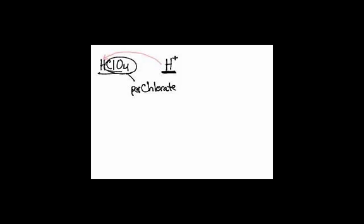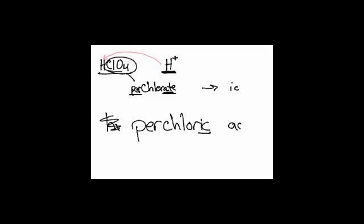Oh, it's perchlorate. It has ClO4. Now watch, it's perchlorate, but it ends in ate. And if it ends in ate, it becomes an ic. So we're going to call this per chlor ic acid. You've got to add the word acid.